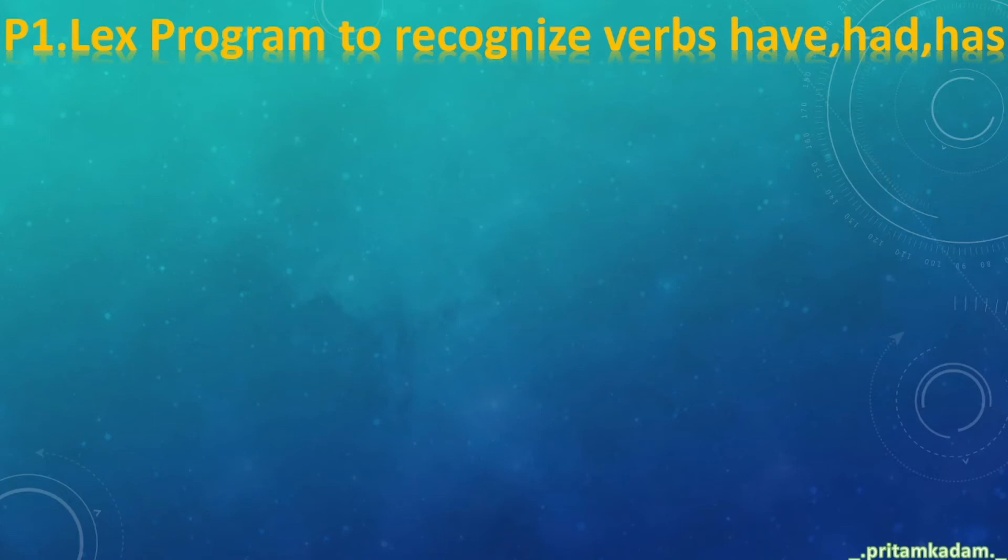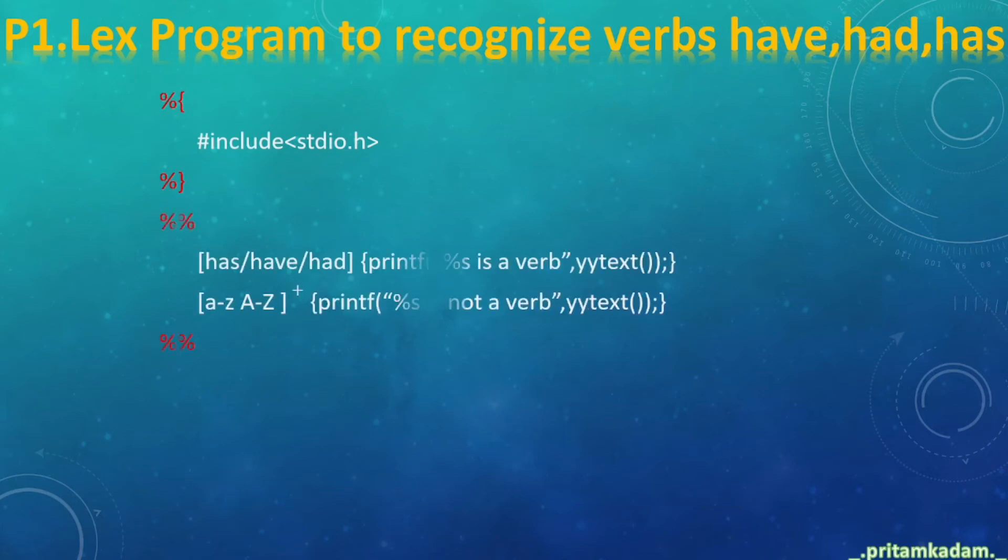Now let's go to the first program of lex: lex program to recognize verbs have, had, has. First, we write #include stdio.h in the first section. Then in the action and pattern section, we first check the pattern as has, have, had, and then printf the string is a verb yytext for that string. And other than that, small or capital, any of those variables are not the specified verbs. Now the third section of void main, we just have to start it by calling the function yylex.